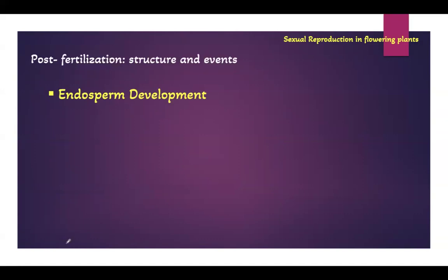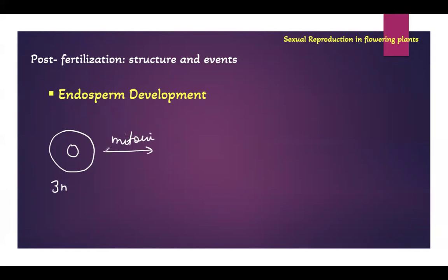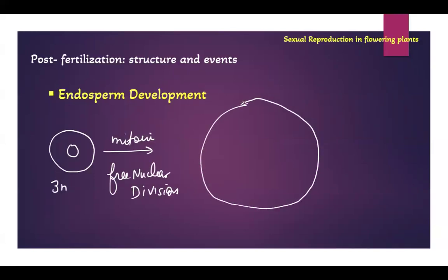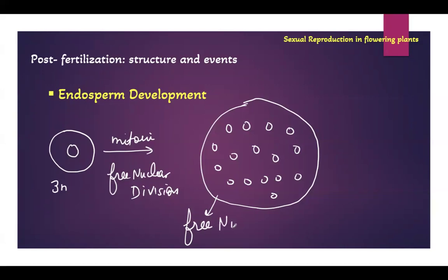We'll see all of them individually. First we will see how endosperm development happens. The primary endosperm cell, as we have seen, is a triploid cell with three sets of chromosomes, and it will undergo mitosis. The initial mitotic divisions are free nuclear divisions - only the nucleus divides forming many nuclei, but there is no cell wall formation. This is called free nuclear endosperm, and a very good example of it is the water of coconut.